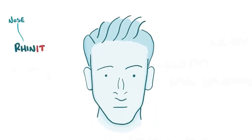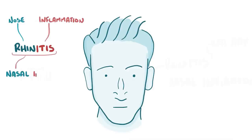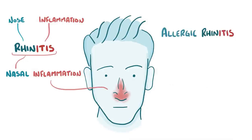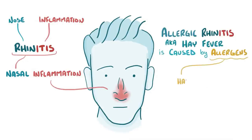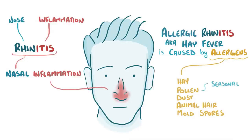Rhine refers to the nose, and itis refers to inflammation, so rhinitis is nasal inflammation. Allergic rhinitis is also called hay fever because it's typically caused by allergens like hay, as well as pollen, dust, animal hair, or mold spores. Since the main trigger is pollinating plants, allergic rhinitis will flare up at specific times of the year.